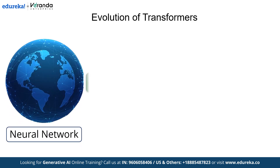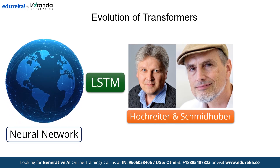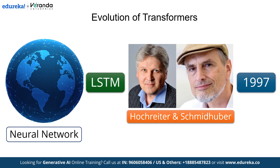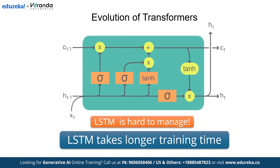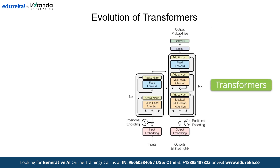Then came long short-term memory, introduced by Hochreiter and Schmidhuber in 1997. Long short-term memory improved on RNNs by remembering sequences for a longer duration and addressing some of the memory issues. However, they were slow to train and difficult to manage at scale. Finally, transformers transformed neural networks, first introduced in the landmark paper, 'Attention is All You Need.'